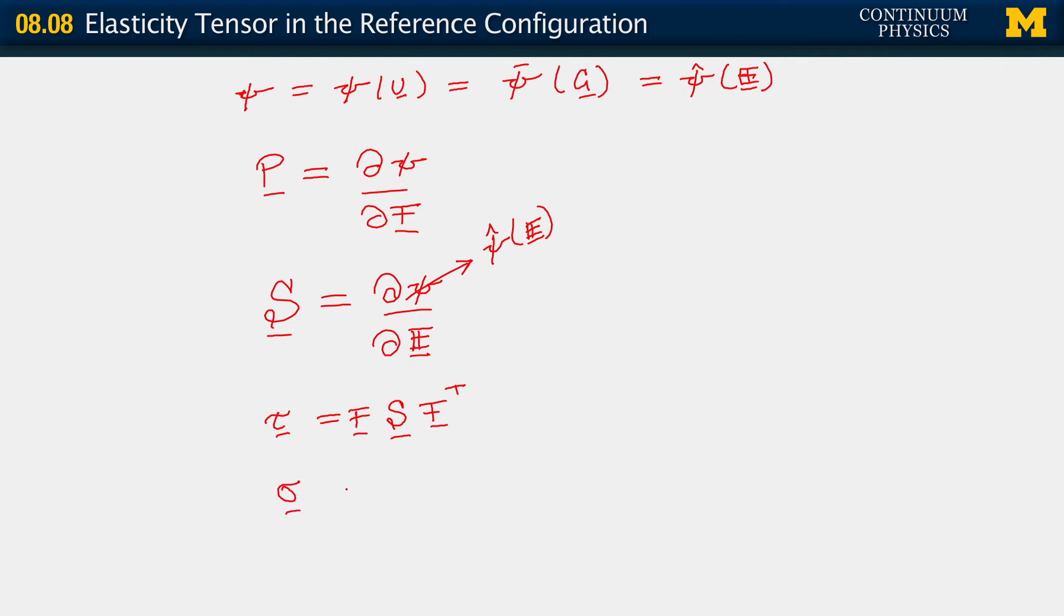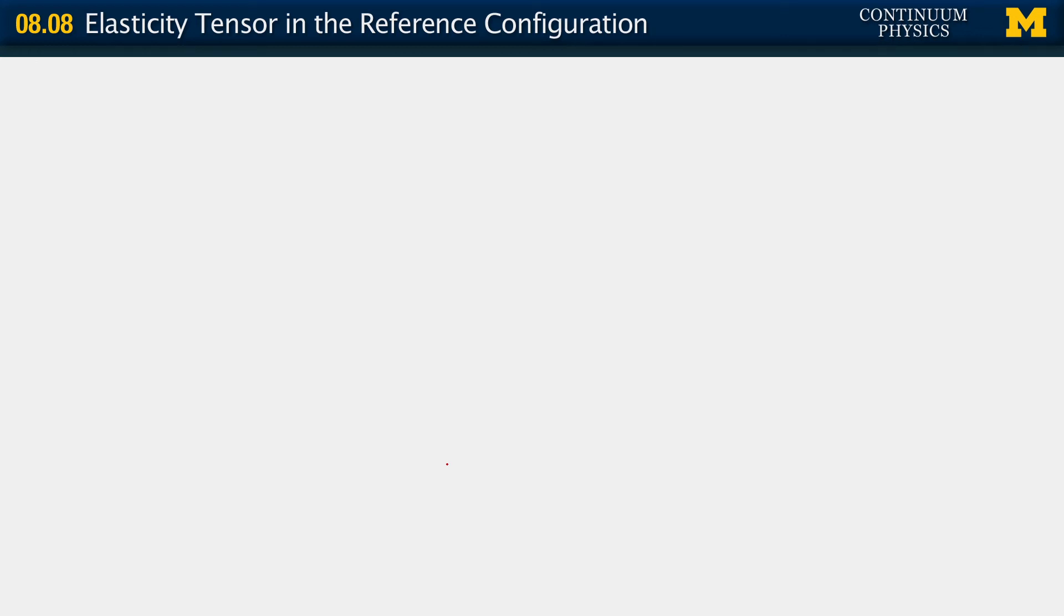And we have sigma, which is just 1 over determinant of F tau. All of these can be computed. Also, we are able to compute the material elastic tangent. We have C, which is the second derivative of psi in whatever form we like, whatever parametrization we like, it's the second derivative.